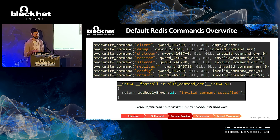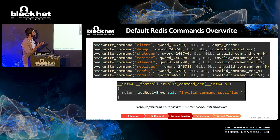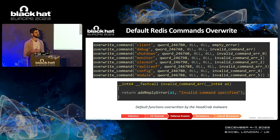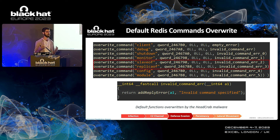The next stage is defense evasion. HeadCrab overwrites default Redis commands in order to hide itself from being detected. For example, the monitor command is used in Redis to display the commands that were executed on the server. By overwriting this command to an invalid command, the attacker basically disables it so users cannot find or use it. What's interesting is the attacker also overwrites the two functions used to infiltrate the server in the first place — slaveof and replicaof — which prevents other attackers from infecting the server using the same channel.